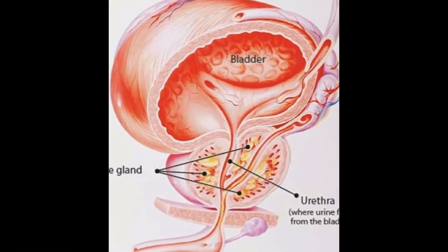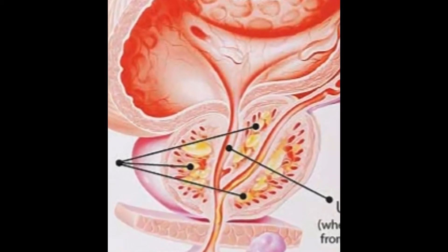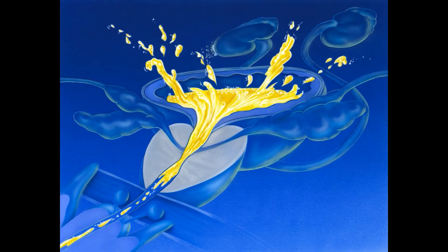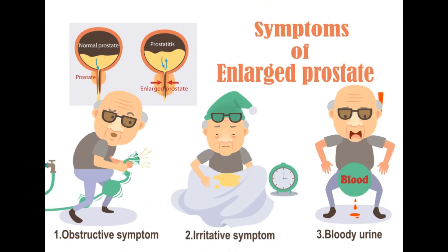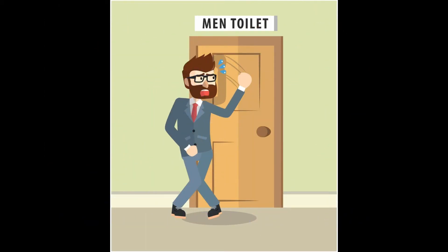Hematuria can also be a manifestation of an enlarged prostate, or BPH. BPH is caused by enlargement of the prostate gland, which is located under the bladder and has multiple functions. However, when it starts enlarging in men, it can cause various symptoms — some are called obstructive symptoms, some are irritative symptoms — and hematuria is also one of the symptoms of an enlarged prostate.